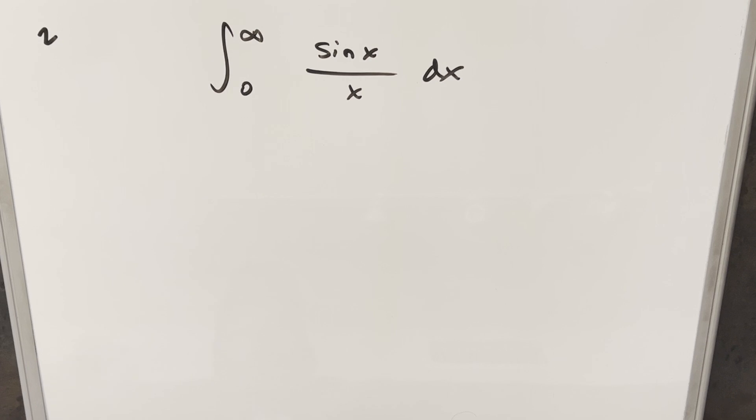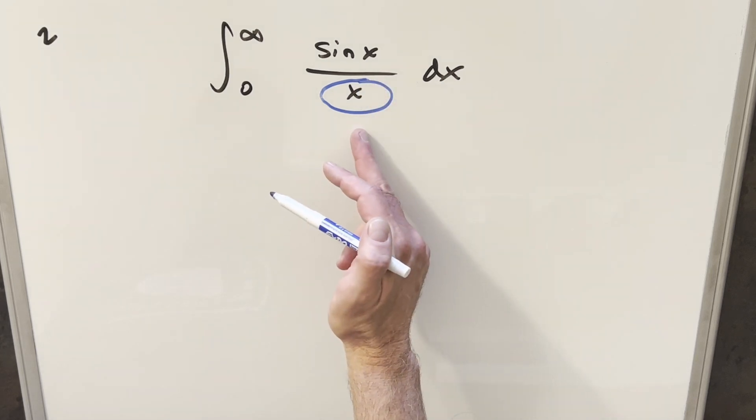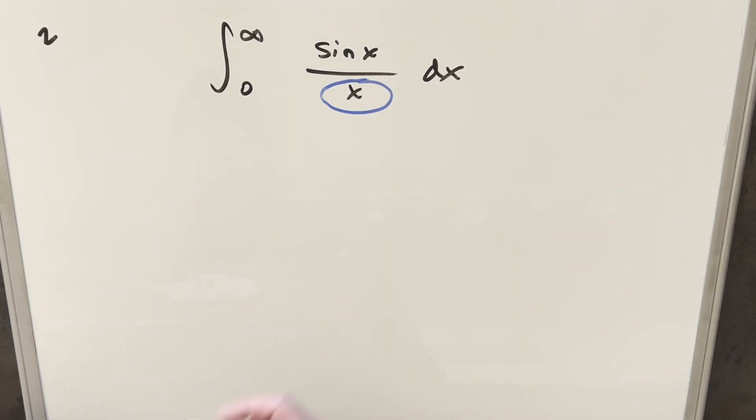Okay, this is a really good one. When I first did this on paper, I used Feynman's trick because we need something to get rid of this x. The way it is here, it's kind of impossible by normal methods.